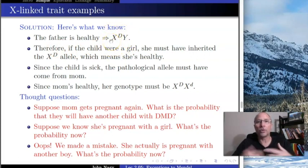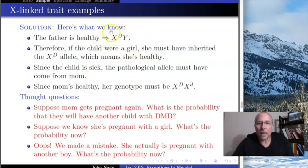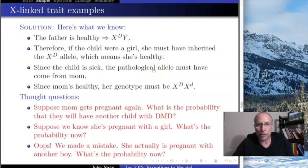Since Duchenne muscular dystrophy is recessive, a daughter receiving X^D from her father cannot possibly be anything but healthy. So we know just from that alone that any daughter could only be healthy — the only way for her to be sick is X^d X^d, and she got a big D from her dad.